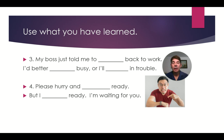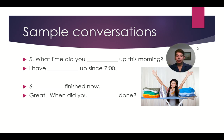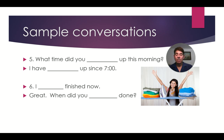Number four: Please hurry and get ready. But I am ready. I'm waiting for you. Number five: What time did you get up this morning? I have been up since seven o'clock. Number six: I am finished now. Great. What time did you get done?